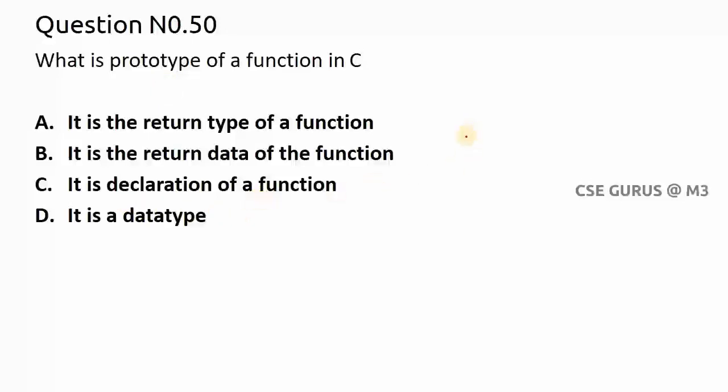So in a function, whenever you are using a function in C programming, you have three properties. Like one is function declaration, the second one is function call, the third one is function definition. So function declaration will be written top of the program which is also we call it as a prototype of a function. So telling the compiler that there is a user defined function in the program, that is about function declaration or function prototype.